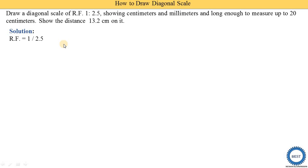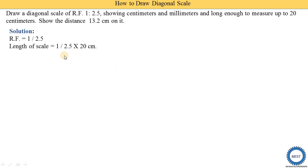First, we write down the representative fraction: RF = 1 divided by 2.5. Then we find the length of the scale. Length of scale equals RF multiplied by the maximum distance to measure, which is 20 centimeters. So 20 divided by 2.5 gives us 8 centimeters. Since the maximum distance is already in centimeters, we do not need to do any unit conversions.